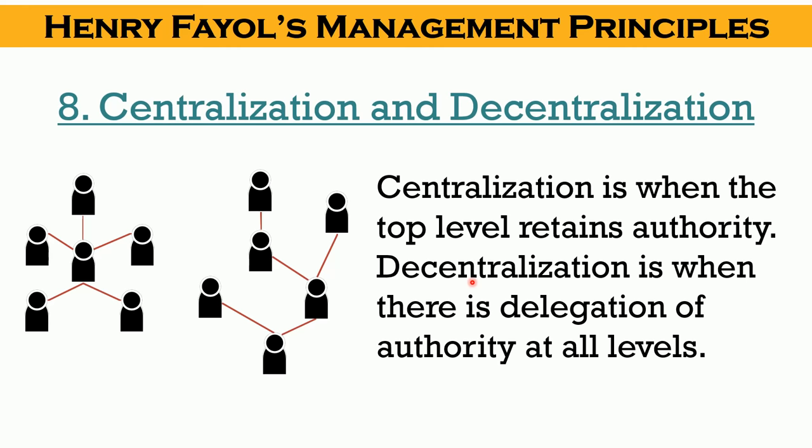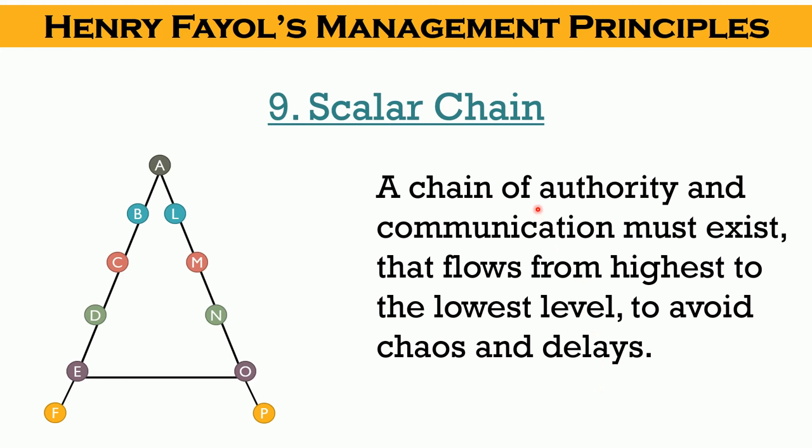Next we have scalar chain. There must be a chain of authority and communication in an organization that flows from the top level to the lowest level. Subordinates report to their immediate bosses — that is supervisors — who then report to their managers. This helps in giving orders and requesting things, and also reduces chaos and delays in operations.